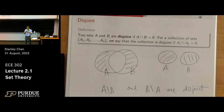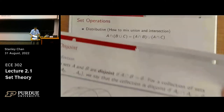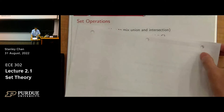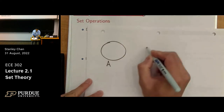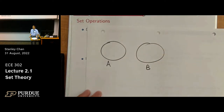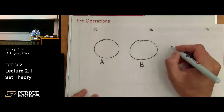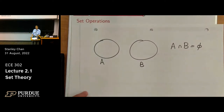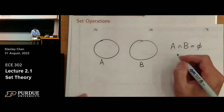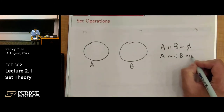This notion of disjoint is a fairly generic concept. Consider two sets A and B — these two sets do not overlap, and so if you take the intersection of A and B you're going to get an empty set. If this happens, we say that A and B are disjoint.